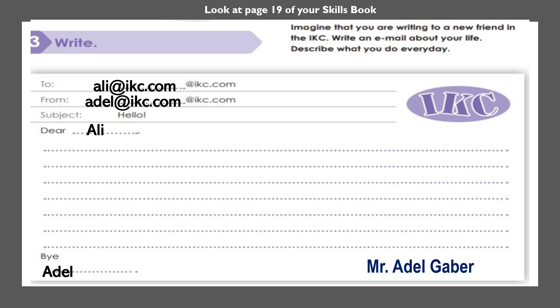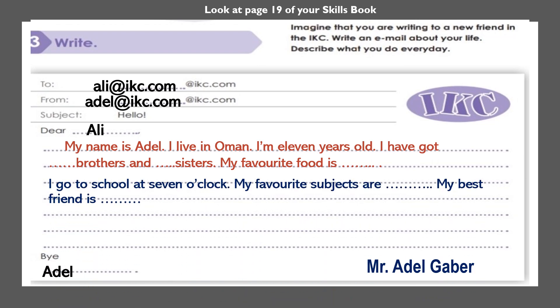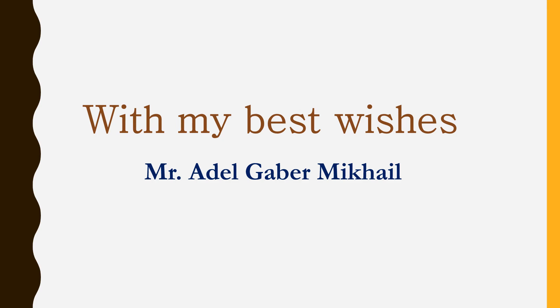You can write your email like this: My name is Adel. I live in Oman. I am 11 years old. I have got brothers and sisters — write the number of your brothers and sisters. My favorite food is so and so — write about yourself. I go to school at 7 o'clock. My favorite subjects are so and so. My best friend is — write the name of your best friend. Close your email like this: I hope you will be my new friend too. Write to me soon. With my best wishes, and write your name as a signature after the word By. Goodbye and good luck!